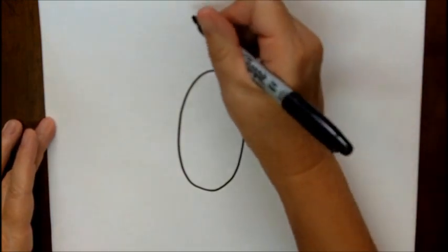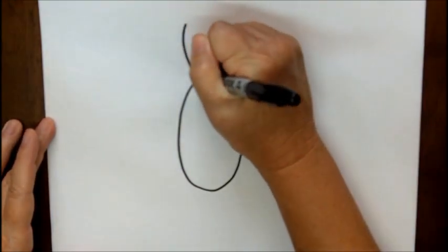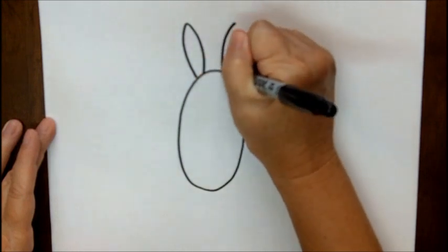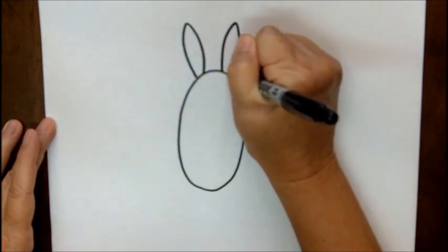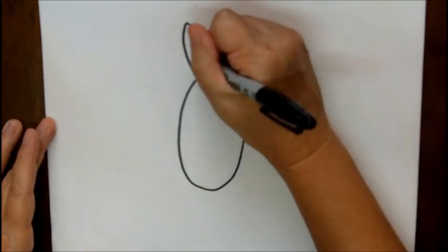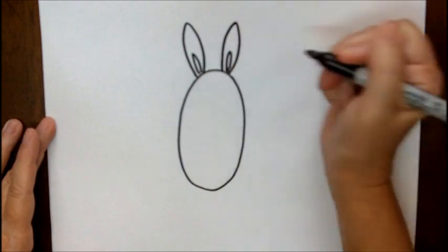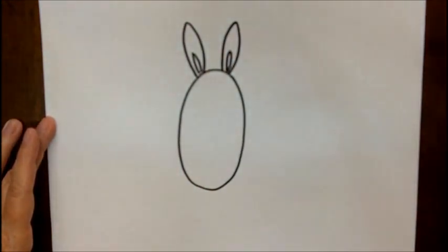At the top of that, let's give him some ears which are just some long curved lines coming down and attaching to the head. Then inside of that you can put some smaller curved lines for the inside of his ear.